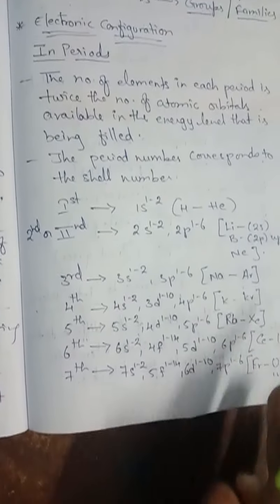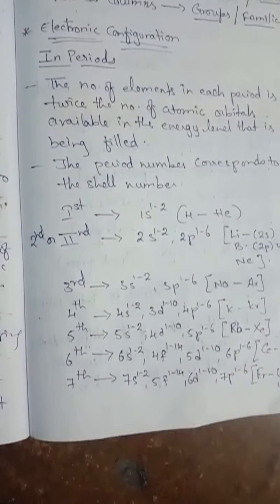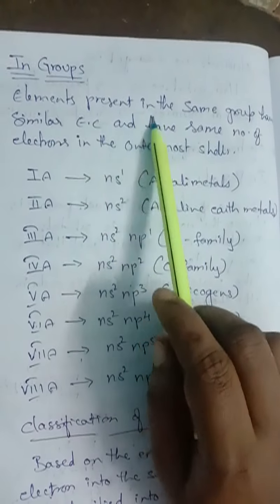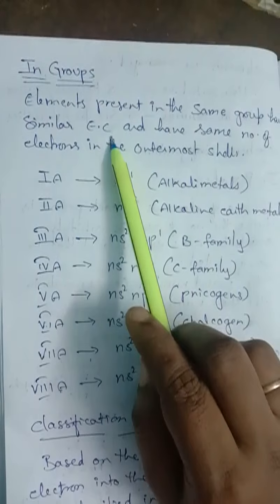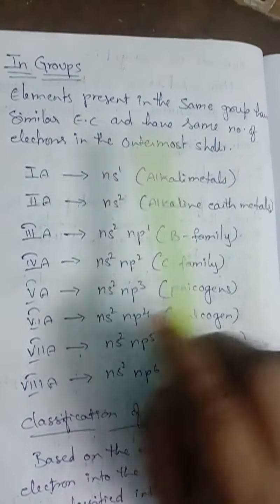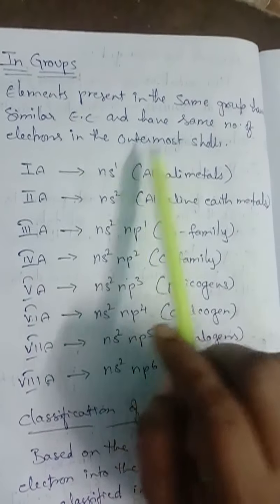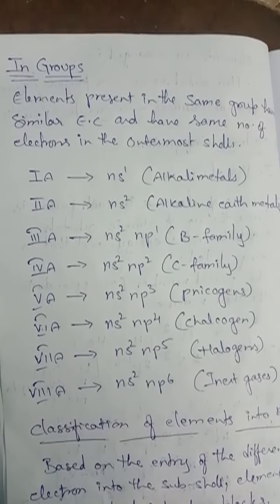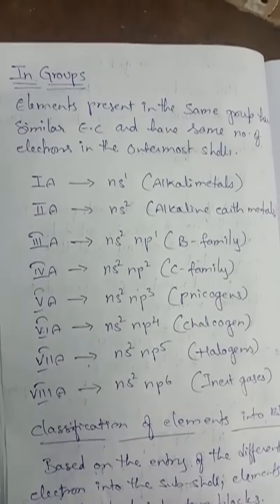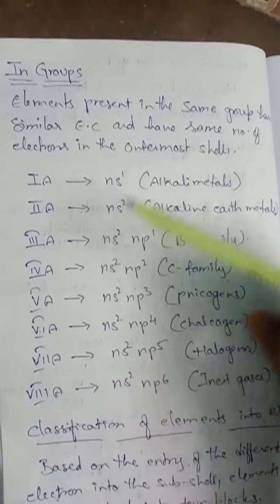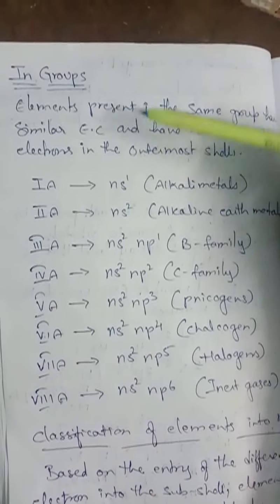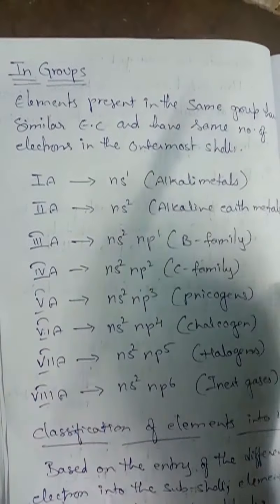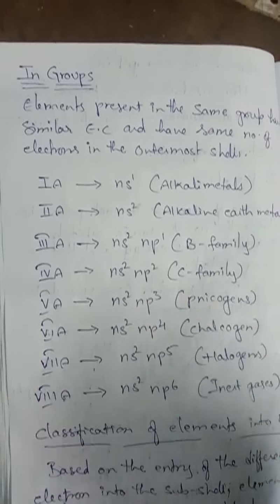Now we are going to move to groups. The elements present in the same group have similar electronic configuration and have the same number of electrons in their outermost shell. The group number itself indicates the valency electrons — the group number gives the hint of how many valency electrons are present.